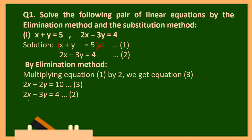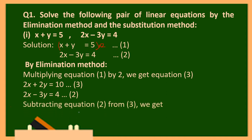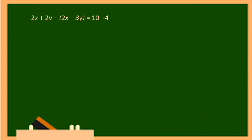Now subtract equation 2 from the new equation 1. Since both 2x terms have positive signs, we subtract. If the like terms have the same sign we subtract; if they have unlike signs we add. So we write: (2x plus 2y) minus (2x minus 3y) equals 10 minus 4.